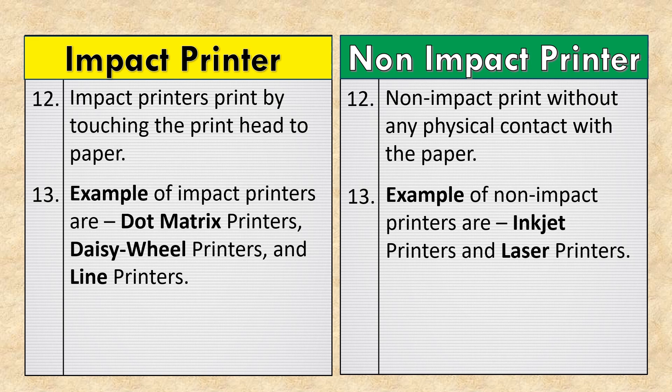Examples of impact printers are dot matrix printers, daisy wheel printers, and line printers. Examples of non-impact printers are inkjet printers and laser printers.